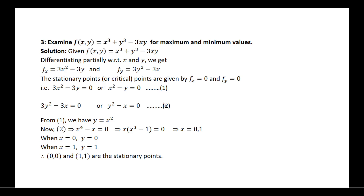By solving equations 1 and 2, we find the stationary points. From equation 1, we have y equal to x squared. Substituting this value in equation 2, that gives x to the power of 4 minus x equal to 0. Taking x as common from these two terms: x into (x cubed minus 1) equal to 0.